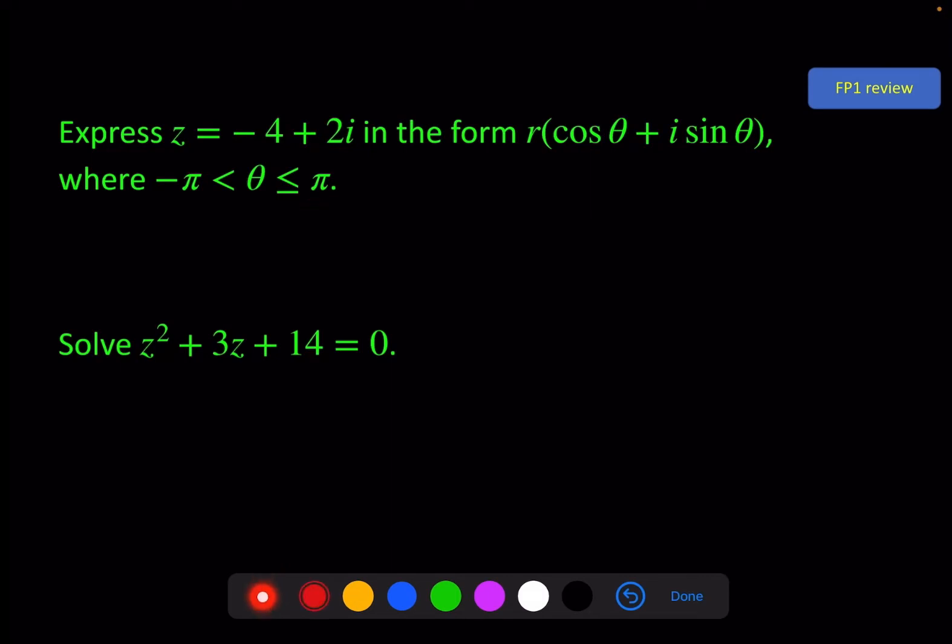To do this, a quick sketch on an Argand diagram has the imaginary axis and the real axis, and we've got minus 4 on the real, 2 on the imaginary, which puts our complex number about here. So the modulus r is just using Pythagoras, the square root of minus 4 squared plus 2 squared, which gives us the square root of 20, or 2 root 5.